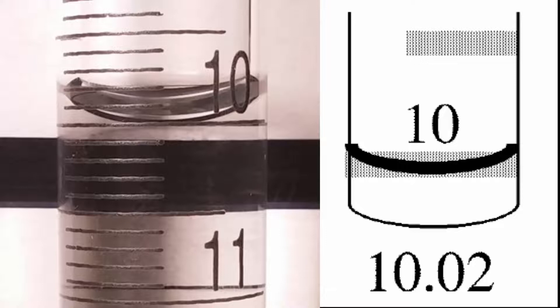For instance, in this example the line that circles the burette is the 10.00 marking which means that the top of the line is 10.00 and the bottom of the line is 10.02.